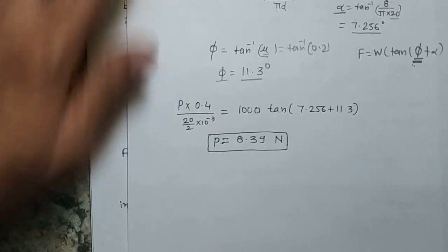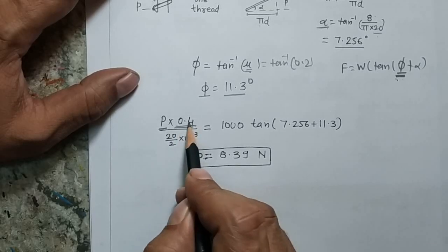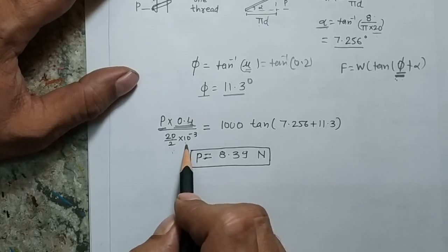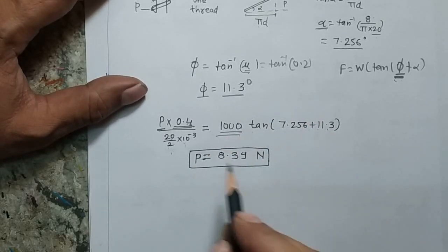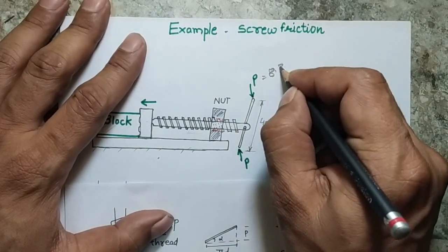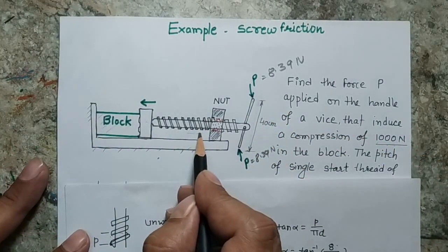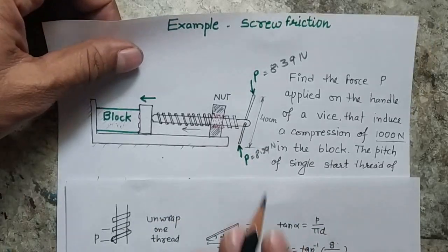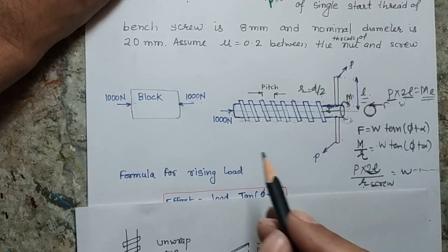Now substituting all values: P is the unknown, the lever length is 0.4 m, the radius R is 20/2 = 10 mm = 10 × 10⁻³ m, the load W is 1000 N, and tan(7.256° + 11.3°) gives the required tangent. Solving this equation, P comes out to 8.39 N. This means applying 8.39 N at each end of the lever creates a moment that moves the screw forward, generating the 1000 Newton compression in the block.